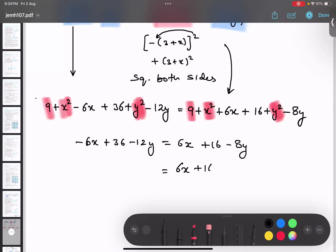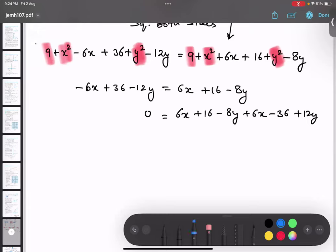6x plus 16 minus 8y plus 6x minus 36 plus 12y equals to 0. Now we are going to solve this thing. 6x plus 6x will give me 12x. And I will do y now. Minus 8y plus 12y is plus 4y. Plus 16 minus 36 will give me minus 20 equals to 0. So this is the relation.